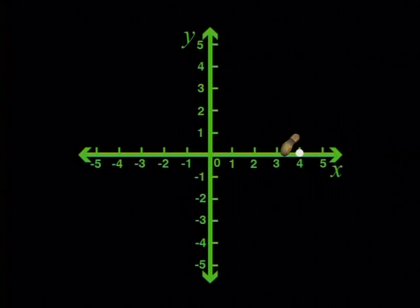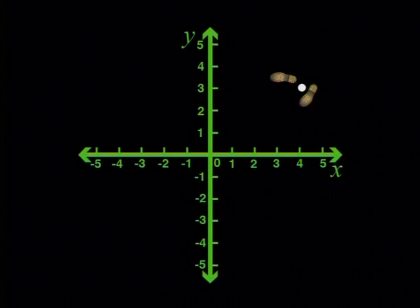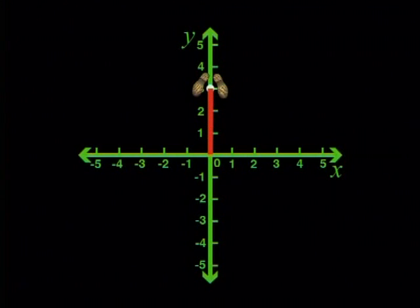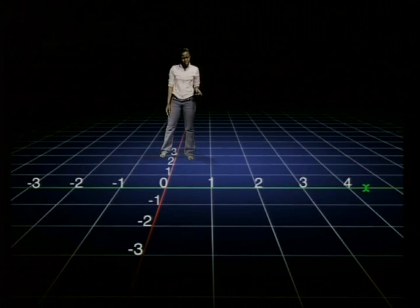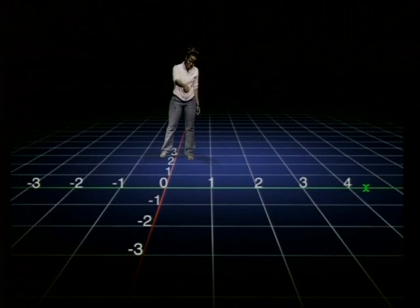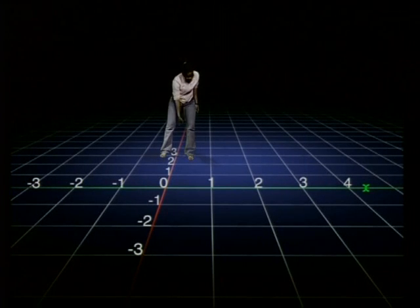Try this now. Go and stand on (0; 3). The y-value is 3 and the x-value is 0. So I'm going to stand on the y-axis over here. That's because x is 0 on the y-axis. So if a point has the x-coordinate of 0, then it lies on the y-axis.